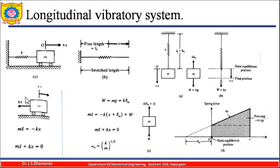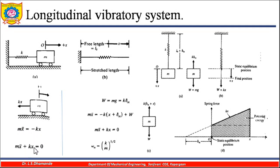The inertia force, which is mass times x double-dot, will be present. The inertia force and the spring force kx are equal in magnitude and opposite in direction. So setting them equal: m times x double-dot equals k times x, and rearranging gives the equation of motion as m·ẍ + kx = 0 for this particular system.